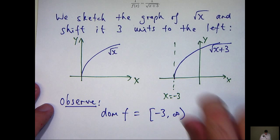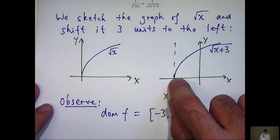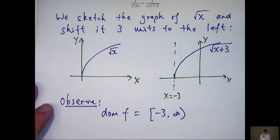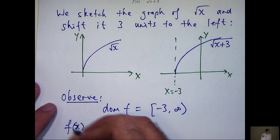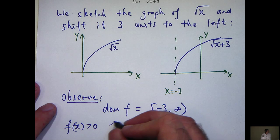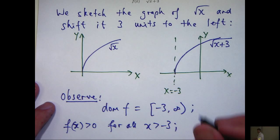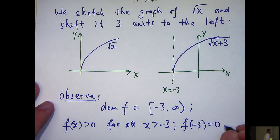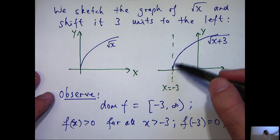Okay, what else do we notice about the graph? Well, you can see the graph touches the x-axis here and it lies above the x-axis elsewhere. So this means that f of x is positive for all x strictly greater than minus 3 and f of minus 3 equals 0.